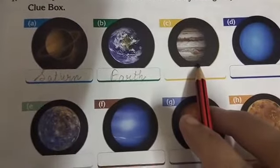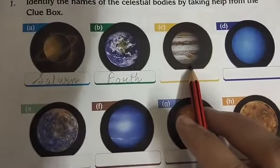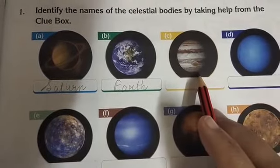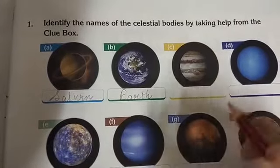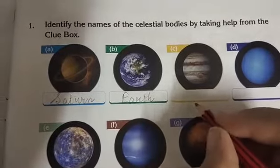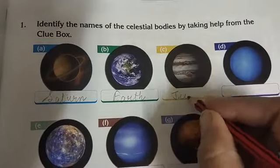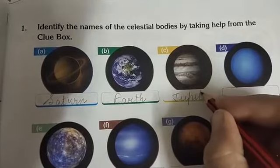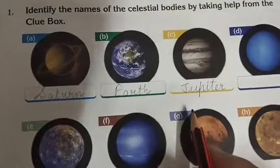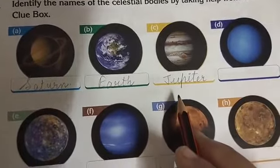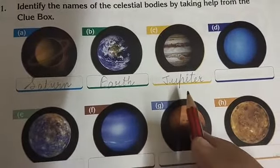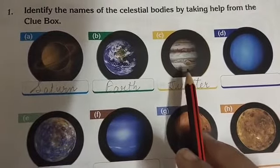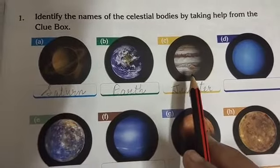Which picture is this? This beautiful picture is Jupiter — the largest planet of the solar system. J, U, P, I, T, E, R. Jupiter is the largest planet in the solar system, the largest one in this family. It is also made up of many hot gases.